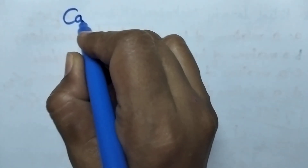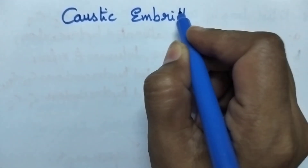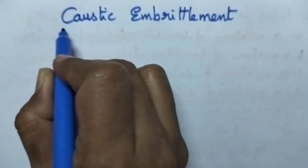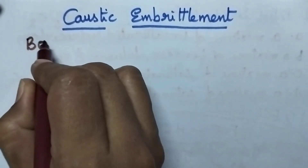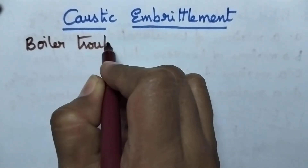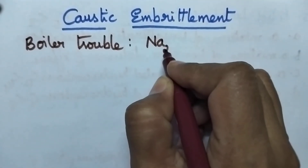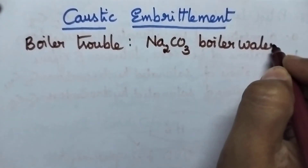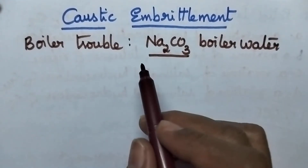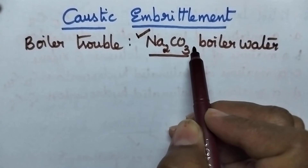Hello students, welcome back to my channel. In this video I am going to discuss in brief about caustic embrittlement. Caustic embrittlement is a type of boiler trouble, mainly due to the presence of soda — that is, caustic soda — in the boiler water. Caustic embrittlement takes place due to the presence of sodium carbonate in boiler water.